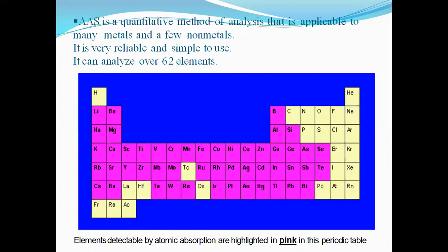The main advantage of this technique is it can analyze over 62 elements in just one sample. For example, if your sample contains 50 to 60 elements, this technique will help you analyze each and every metal, nonmetal, and metalloid present in your sample. All the elements highlighted in pink shade on the periodic table can be analyzed by AAS.